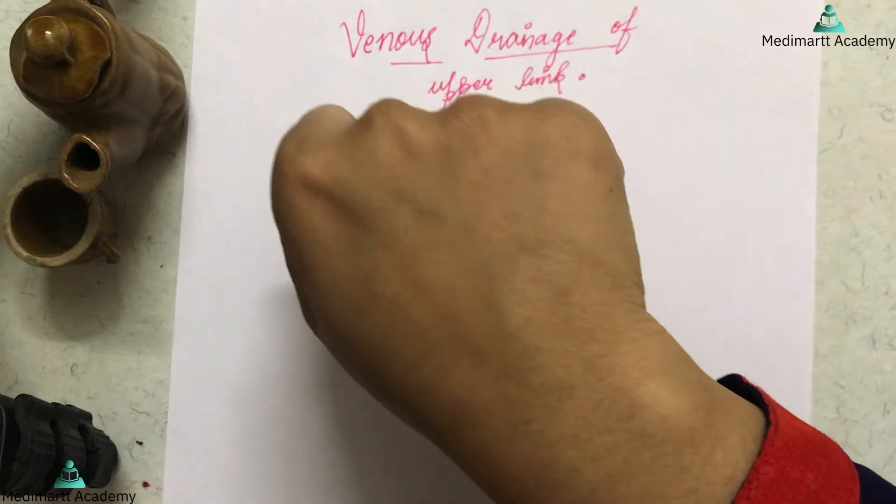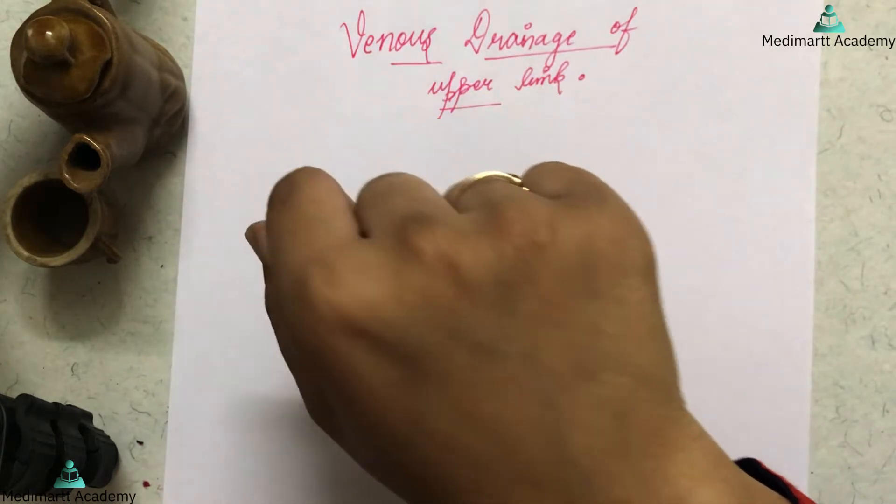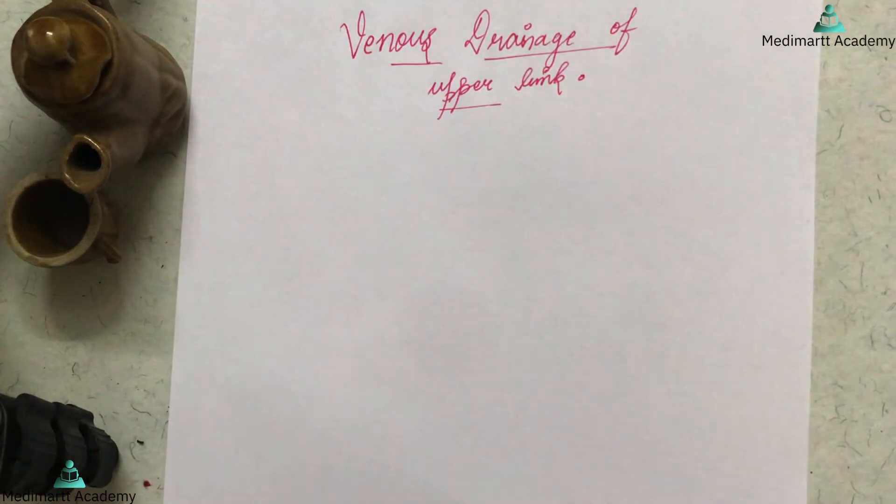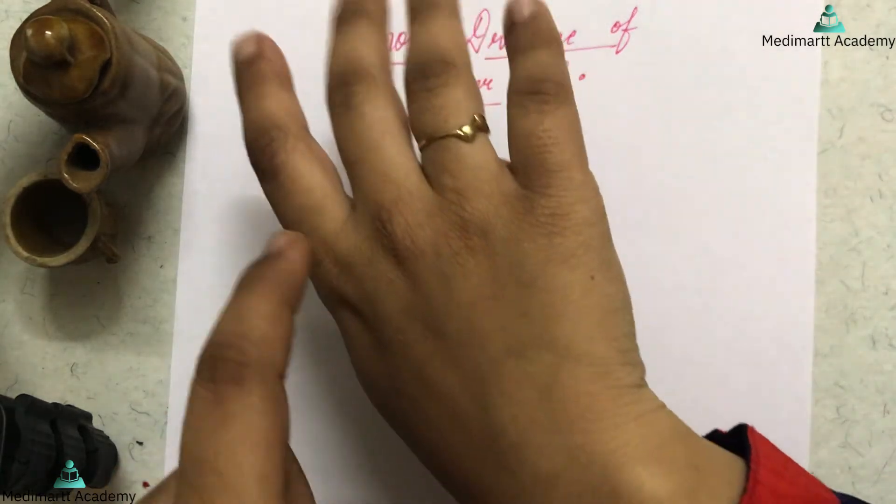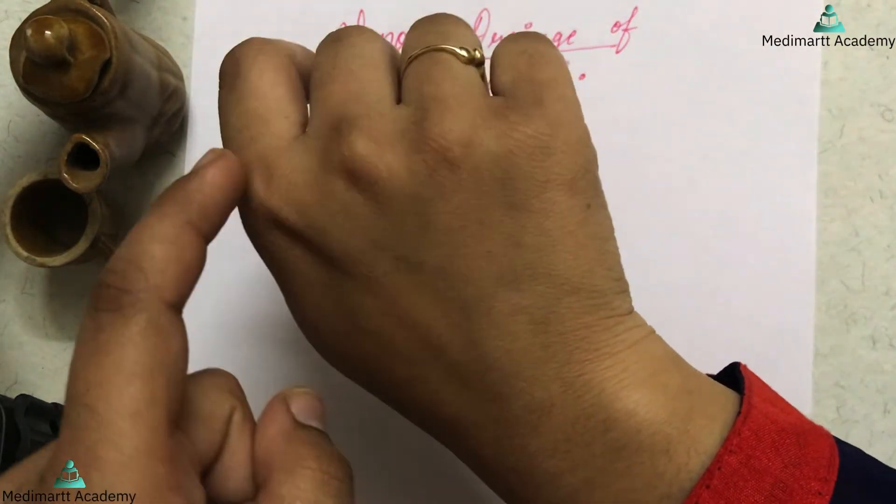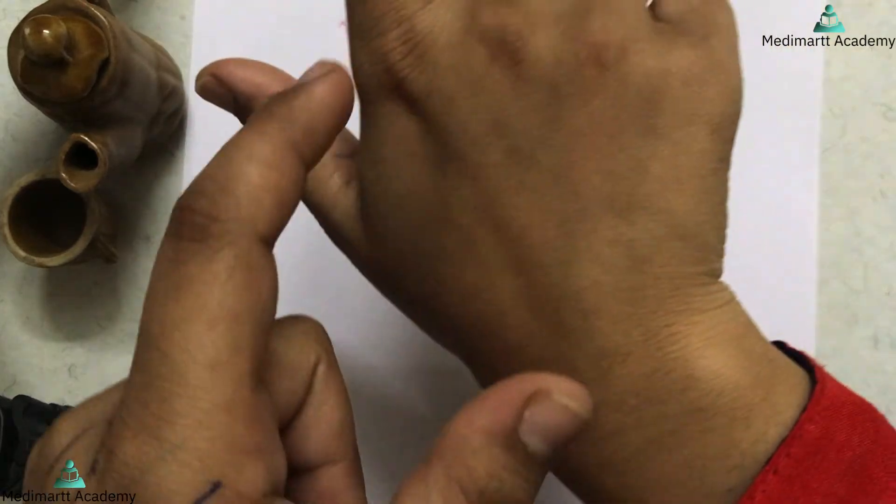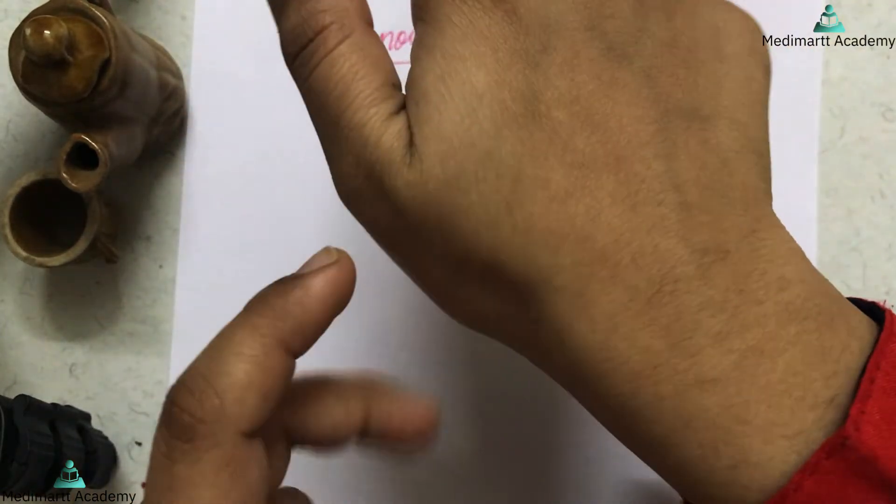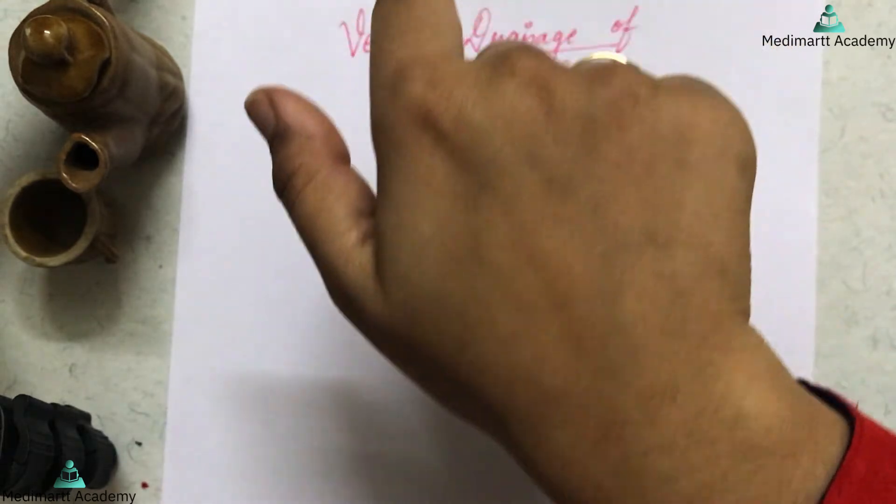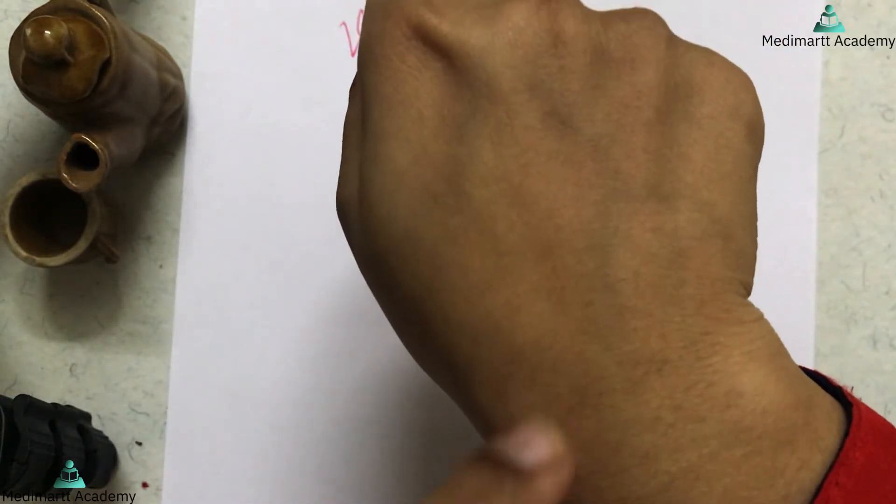This dorsal venous arch will be in the back of the hand. It is formed by three metacarpal veins: one from the medial side of the little finger, one from the radial side of the index finger, and two from the thumb, forming the dorsal venous arch.